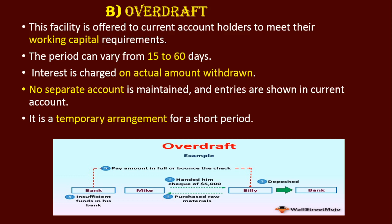Here is a demonstration. You have two friends, Mike and Billy. Billy has purchased material from Mike and handed over a check of 5,000. Billy will deposit this check into the bank, but if the account does not have sufficient funds, the check will bounce and Billy will not get the money. This is the overdraft facility — if the funds are insufficient, the bank will transfer money into that account and the person can repay it back afterwards.